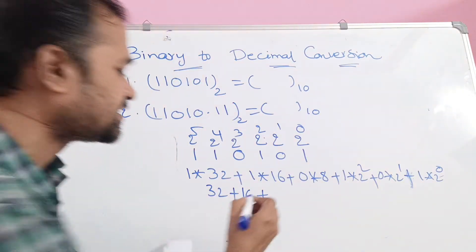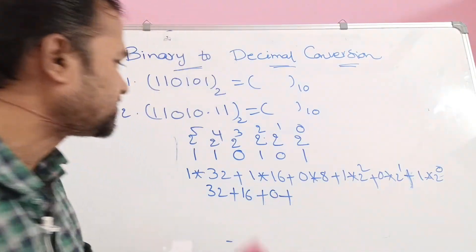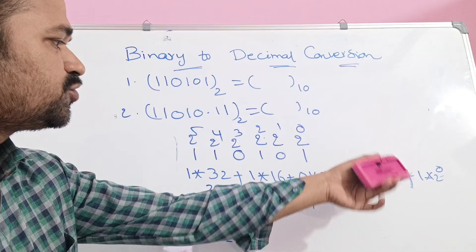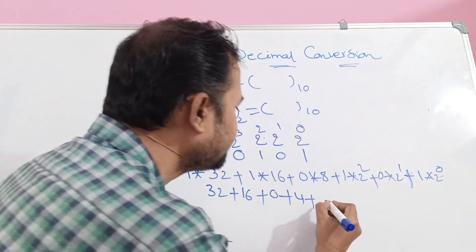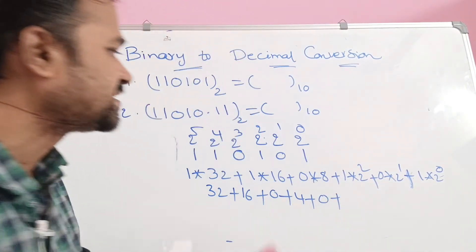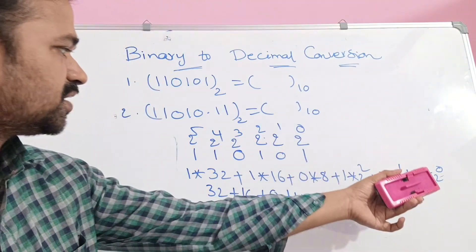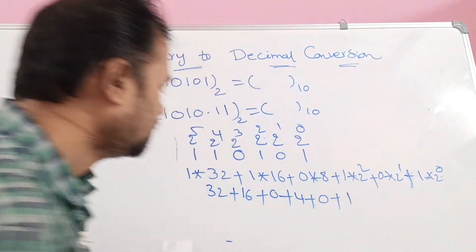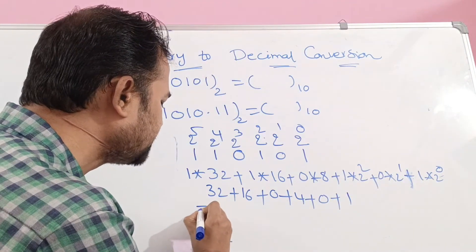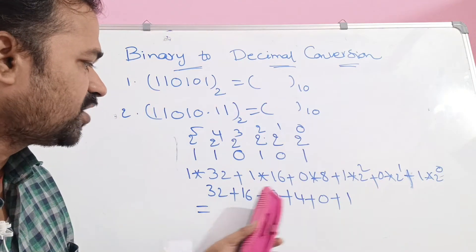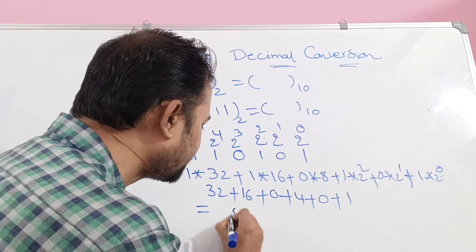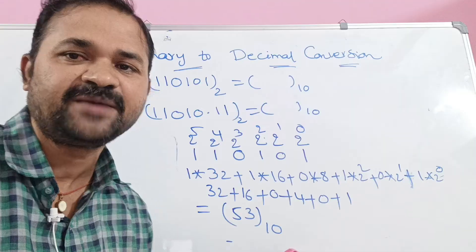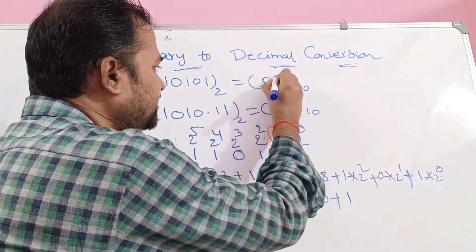Plus 0 into 8 means 0. Plus 1 into 2 power 2 means 4. Plus 0 into 2 power 1 — 0 into anything is 0. Plus 1 into 2 power 0 — 2 power 0 means 1, so 1 into 1 means 1. Simply add the values: 32 plus 16 means 48, 48 plus 4 means 52, 52 plus 1 means 53. So 53 base 10 is the corresponding decimal number for this binary number.